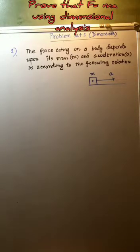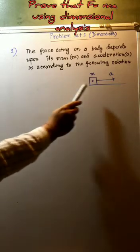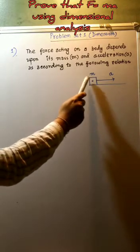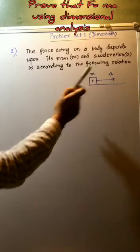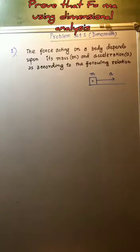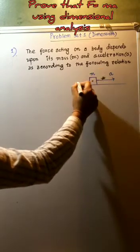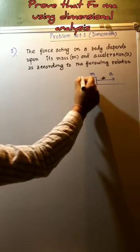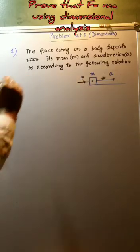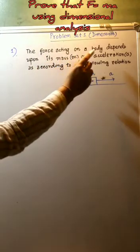According to problem set one, dimensions chapter, numerical number one: we have to prove that force is the product of mass and acceleration. For that we can draw this diagram — a body of mass M which is moving with an acceleration A. In this case, a force F is acting on this body in the direction of motion.